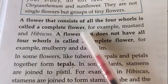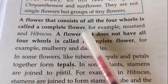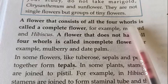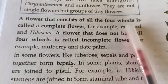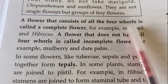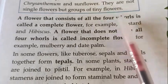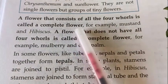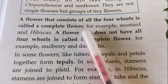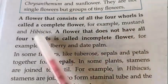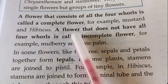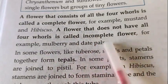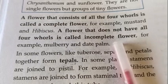A flower that consists of all the four whorls is called a complete flower. The four main parts of a flower are sepals, petals, pistil, and stamen. If the flower contains all these four parts, then that flower is called a complete flower. For example, mustard and hibiscus.